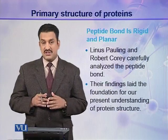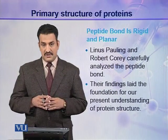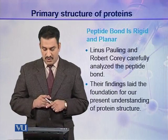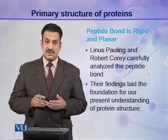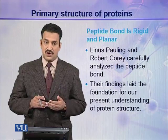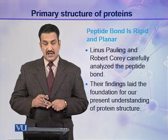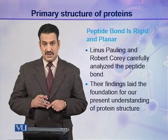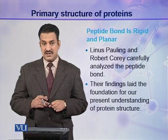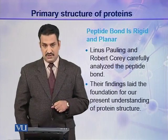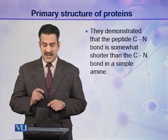The peptide bond is rigid and planar — this was established by Pauling and Corey. Linus Pauling and Robert Corey carefully analyzed the peptide bonds present in protein molecules. They also recognized the importance of hydrogen bonding and other weak interactions present in biomolecules, and they made a number of important conclusions. Their findings laid the foundation of our present understanding of protein structure.